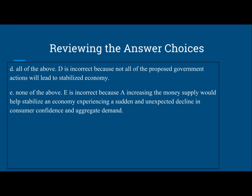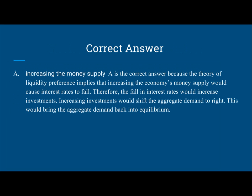D — all of the above — is also incorrect because not all of the proposed government actions will lead to a stabilized economy. E — none of the above — is also incorrect because A, increasing the money supply, would help stabilize an economy experiencing a sudden and unexpected decline in consumer confidence and aggregate demand. So answer A is the correct answer: increasing the money supply.